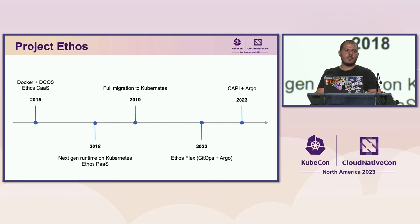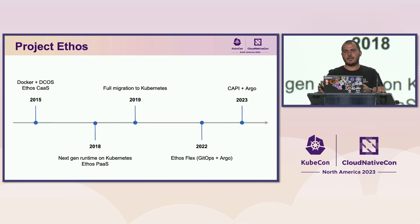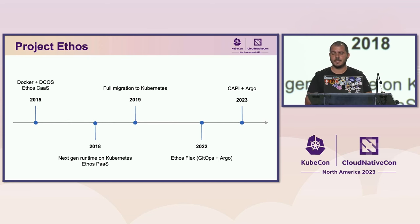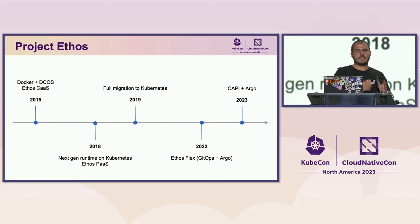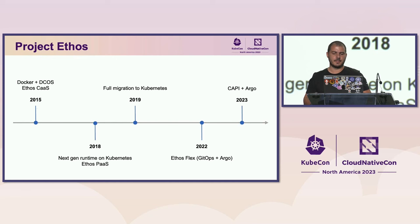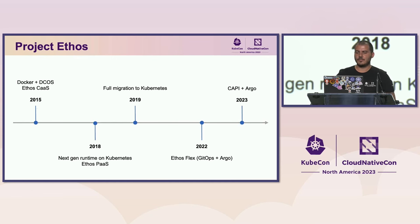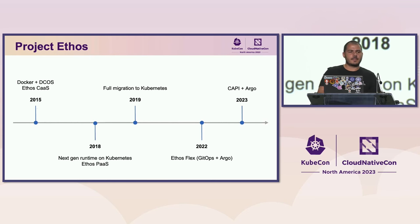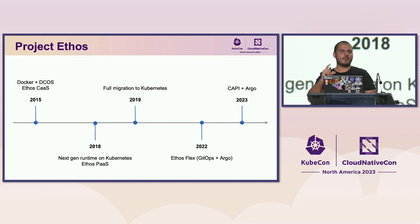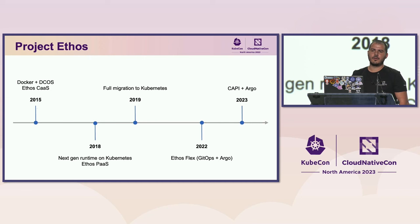This approach is also valuable when your company is involved in acquisitions — making migration of applications to your company's platform is a straightforward process using Kubernetes namespaces. In 2019, we started the full migration of legacy CAS users from DCOS to Kubernetes. And in 2022, based on the experience we got with Ethos CAS and Ethos PaaS, we introduced a new flavor: Ethos Flex. Ethos Flex runs on top of Ethos PaaS and is based on GitOps and Argo.